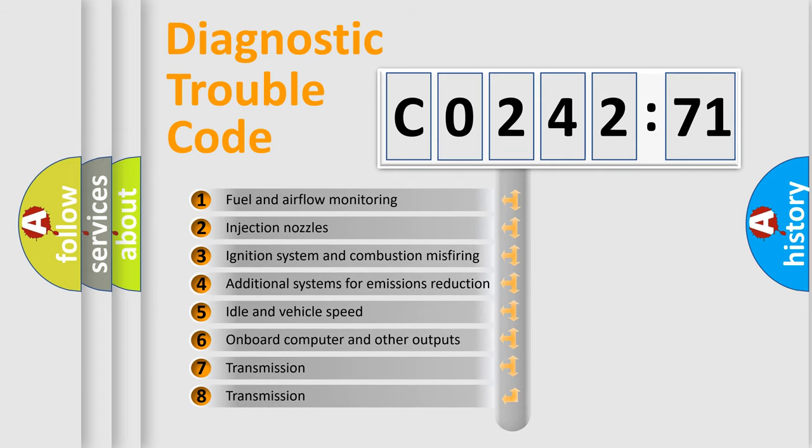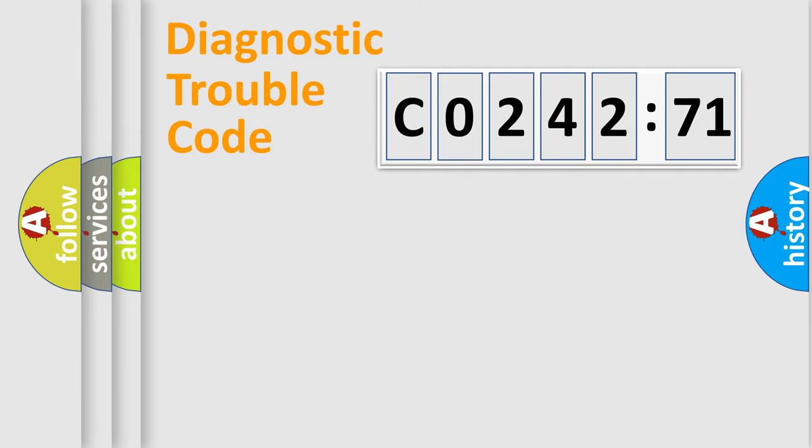The third character specifies a subset of errors. The distribution shown is valid only for the standardized DTC code. Only the last two characters define the specific fault of the group.